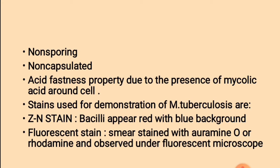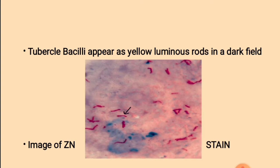What are the stains used for the demonstration of Mycobacterium tuberculosis? The first stain is the Z-N stain, i.e., Ziehl-Neelsen stain. In Ziehl-Neelsen stain, the bacilli appear as red with a blue background. Then fluorescent stain method: the smear is stained with fluorescent dyes like auramine-O or rhodamine and observed under a fluorescent microscope, where tubercle bacilli appear as yellow luminous rods in a dark field.